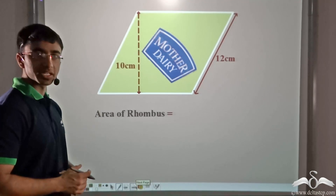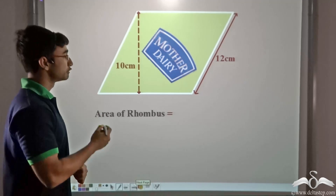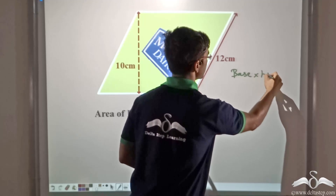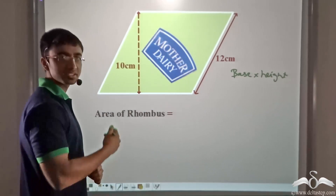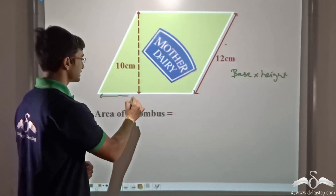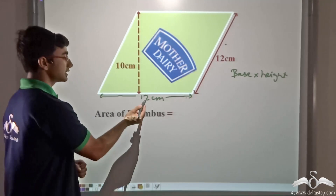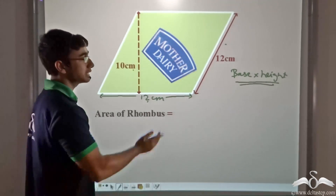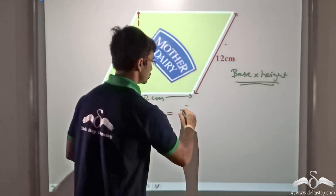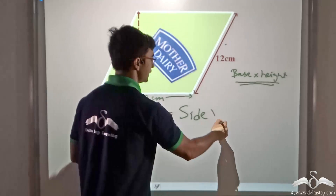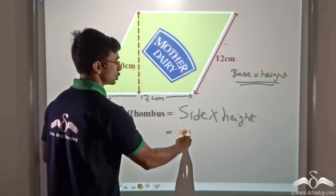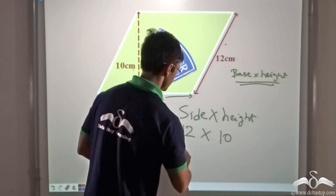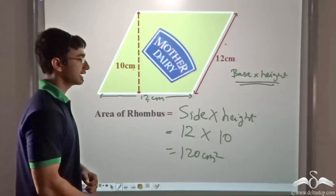Next we have to find out the area of the particular rhombus. The formula for finding out the area of a rhombus is very simple. If you recall, for a parallelogram the formula was base into height. Now in the case of a rhombus all sides are equal — this side is 12 centimeters and the other side is also 12 centimeters. So the formula will be side into height. The side given to us is 12 centimeters and the height given to us is 10 centimeters, so this gives us an area of 120 centimeters square.